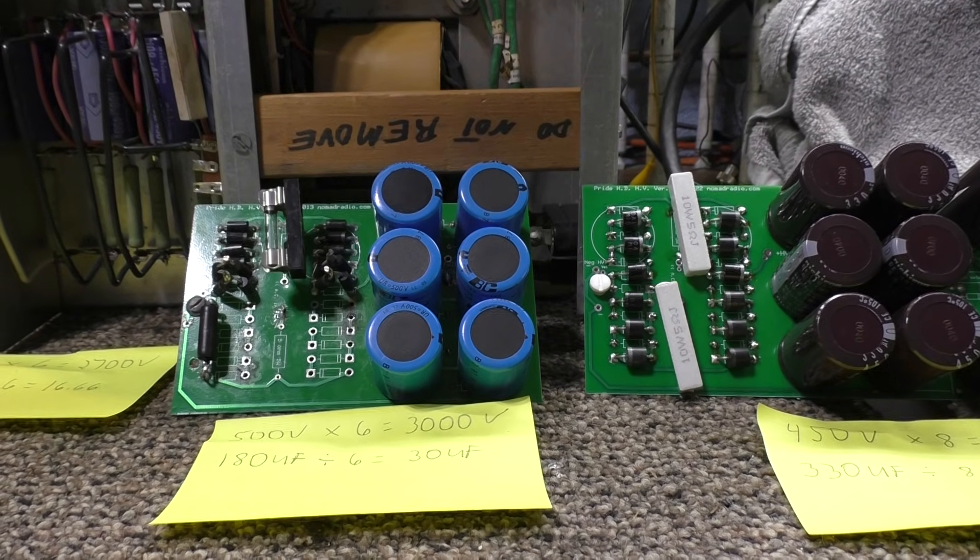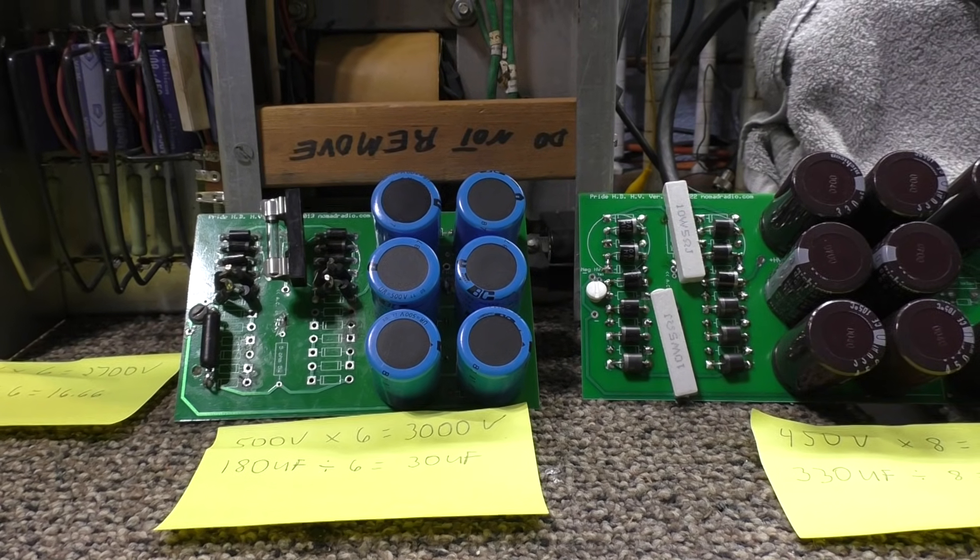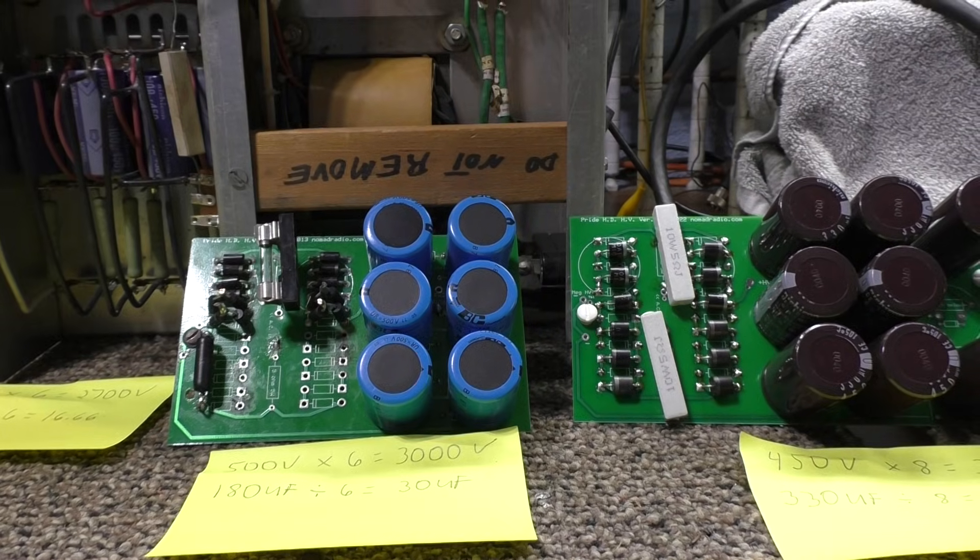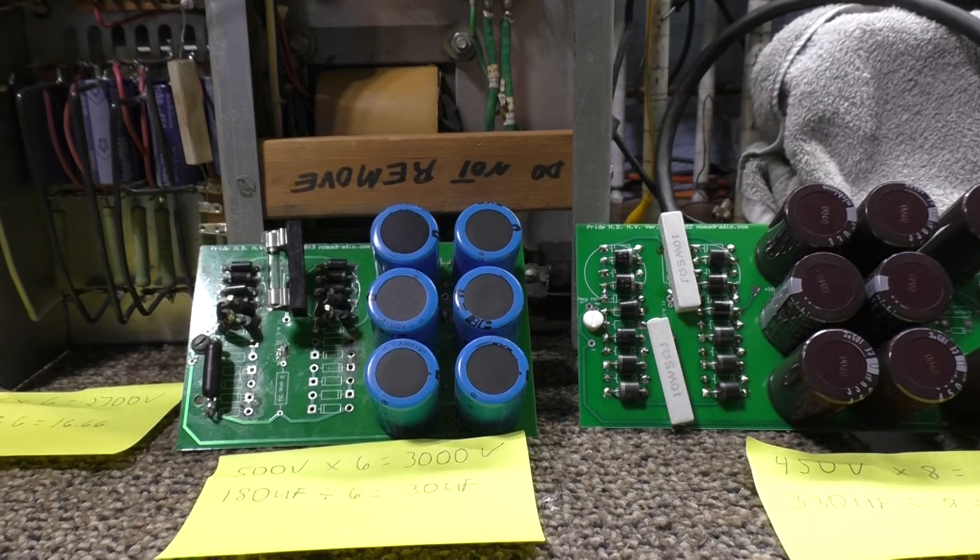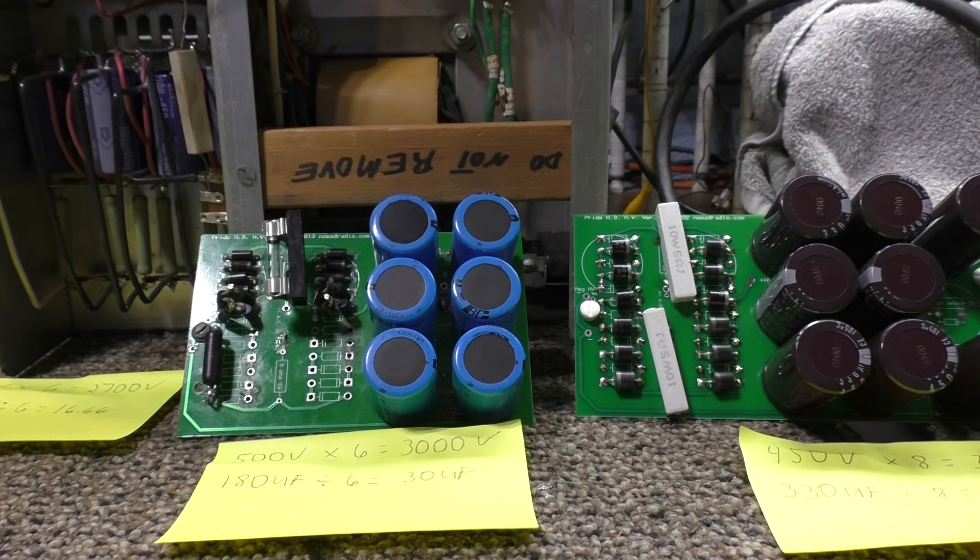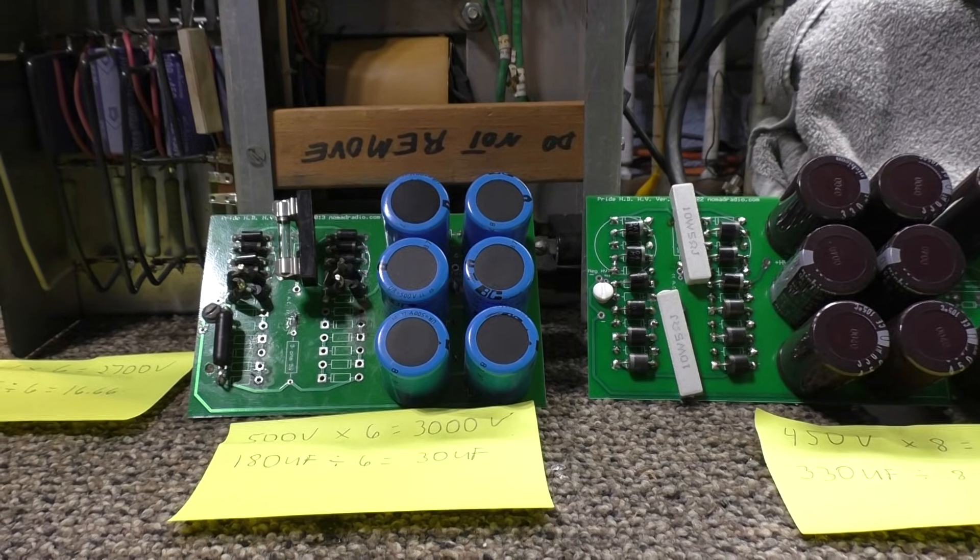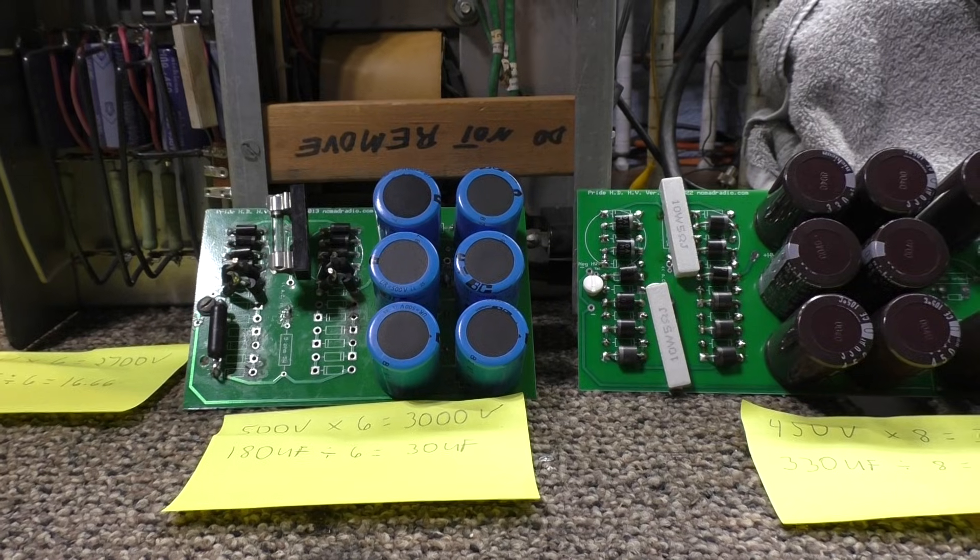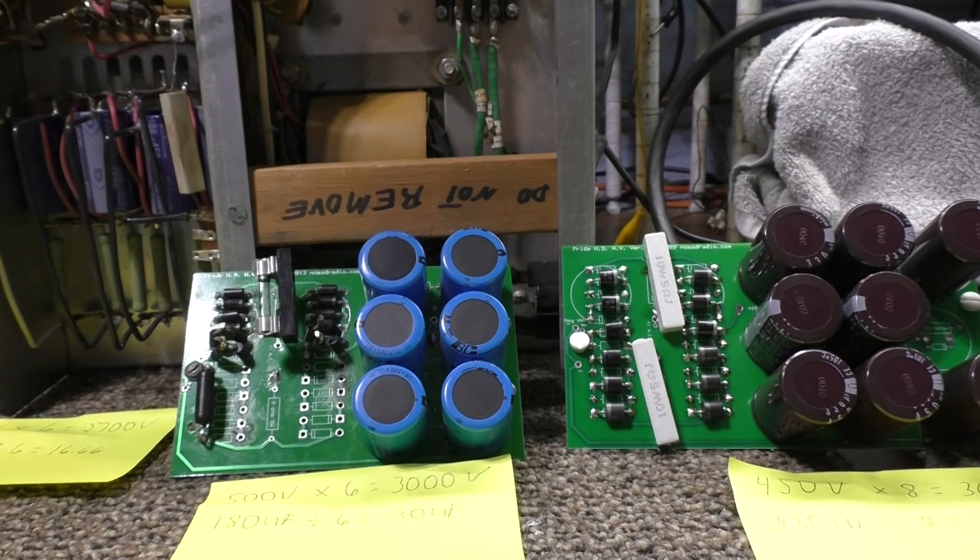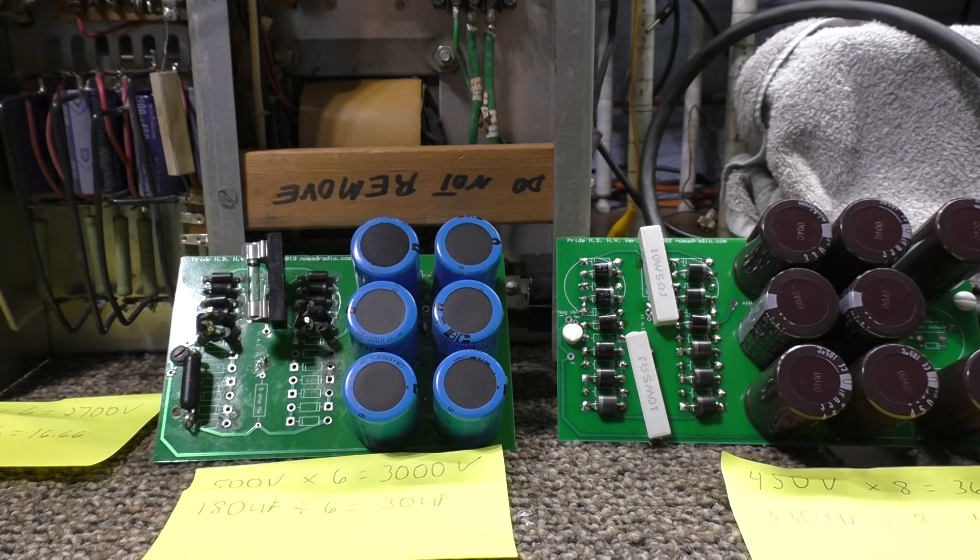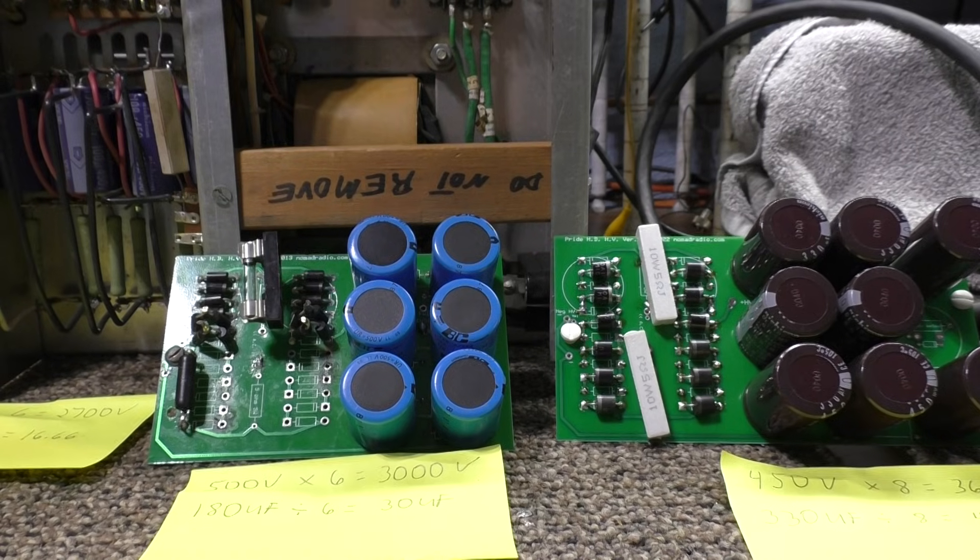But anyway, for high-powered, high-voltage linear amplifiers, the most common is the 3500Z tube. 3500Zs normally run about 3000 volts on the plate. So in order to get a capacitor that can handle the 3000 volts, they put a multiple group of electrolytic capacitors in series to get to the voltage rating.